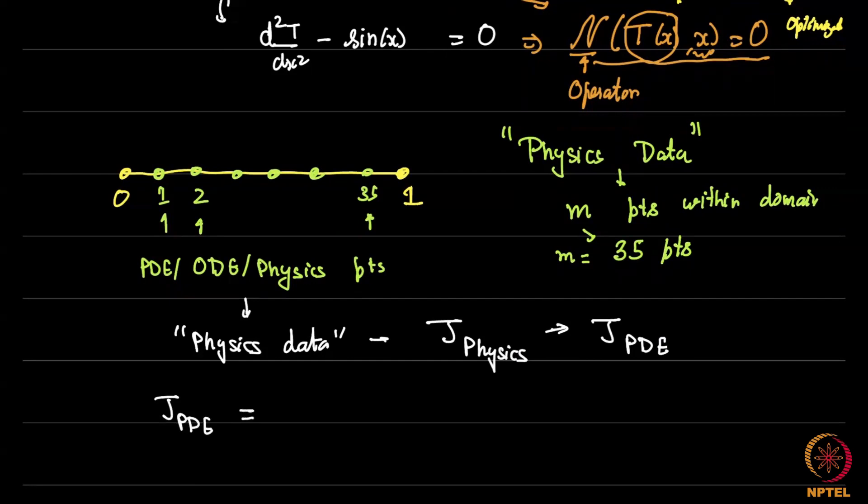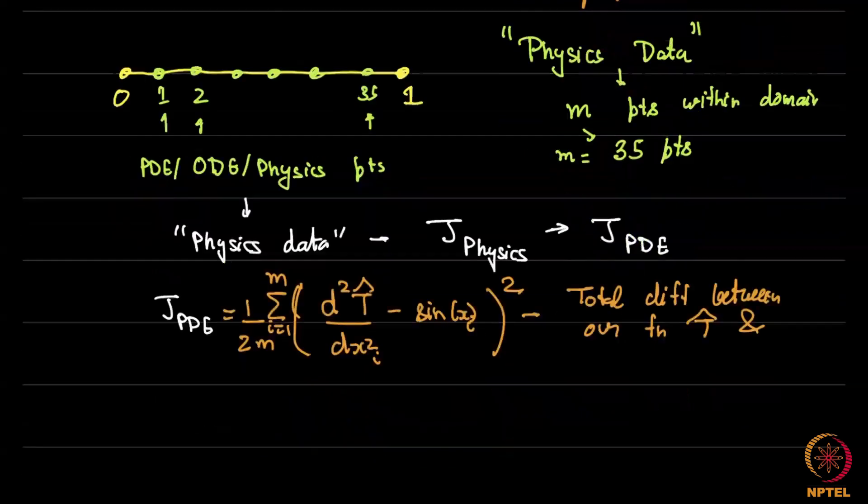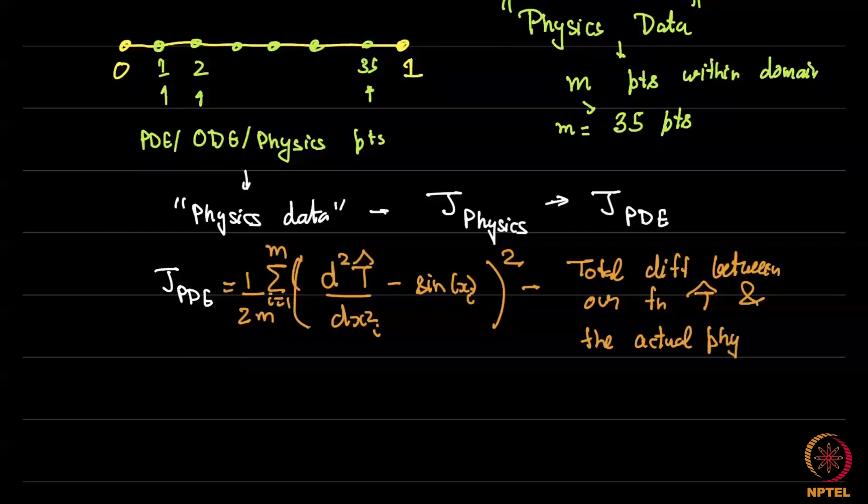J_PDE is whatever you predicted. So here obviously just like we did before we need a hypothesis function and the hypothesis function is T̂ some function that we decide on minus sin of x at these points whichever points we have. D squared and summed up and if you wish we can have a 1/2 factor and 1/2 into the number of points. The summation is from i equal to 1 to the number of points. This denotes the total difference or square difference between our function T̂ and the actual physics of the problem.